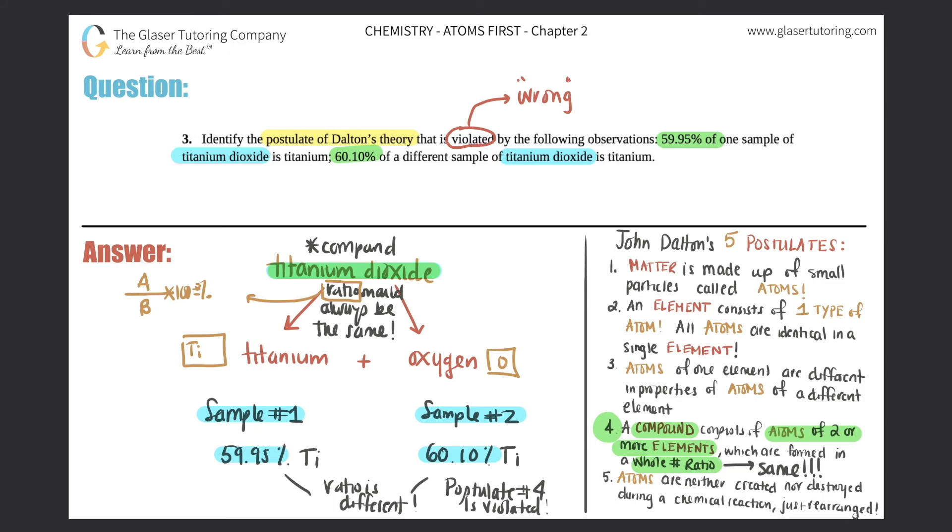And since these have two different percentages, their ratios off, therefore it's not the same compound. So that's the postulate that was violated. Number four.